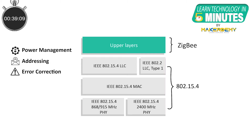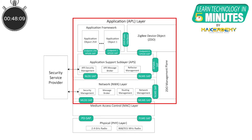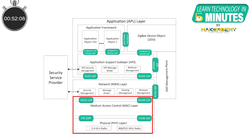The IEEE 802.15.4 is a set of standards that define power management, addressing, error correction, message formats, and other point-to-point specifics necessary for proper communication to take place from one radio to another. Thus, the first and the second layers are defined in the Zigbee specification, while the third and the fourth layers are defined in the IEEE 802.15.4 standard.